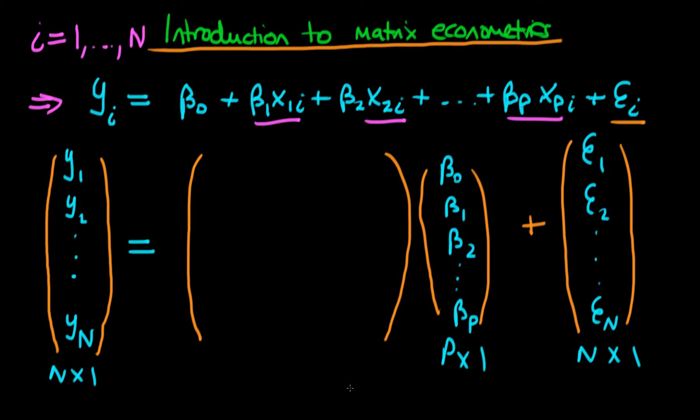To make the dimensions match up, this matrix, which I haven't defined yet, better have dimensions n by p. Then we have a cancelling of the inner dimensions of these matrices, and we're left with an n by 1 vector overall. So what are the inner components of this matrix? It's actually quite simple to define.